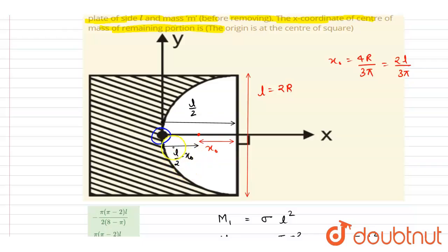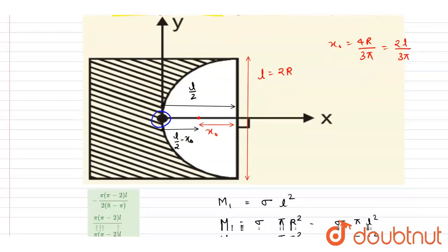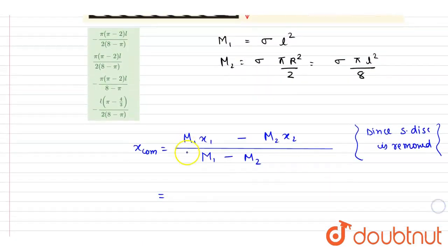Where x₀ is 2l by 3π, so this quantity is 0 minus m₂. Here we wrote it is this, so we'll use it further. x₂ is l by 2 minus x₀, where x₀ is 2l by 3π, in division m₁ minus m₂.